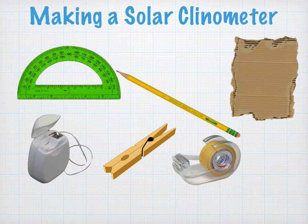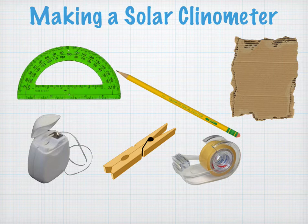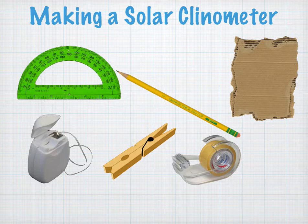Next, we're going to make a solar clinometer. You'll need a protractor, a pencil, a piece of cardboard, some string or dental floss or thread, a clip, and some tape.